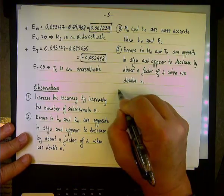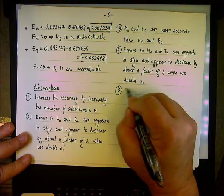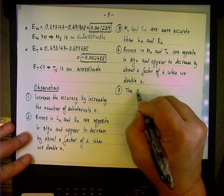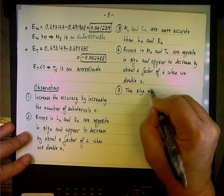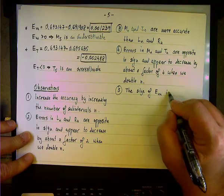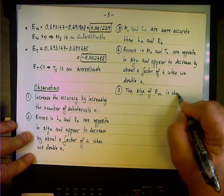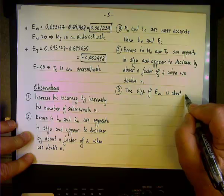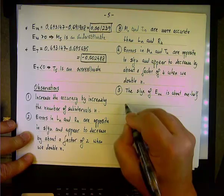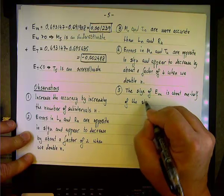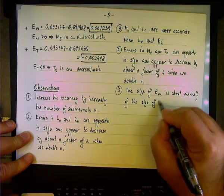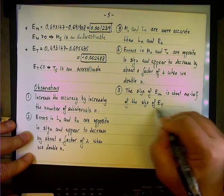Okay, and last observation is to do with the size of the error, the size of the error in the midpoint. So, E sub M is about one-half of the size of the error in the trapezoidal technique, so the size of E sub T.